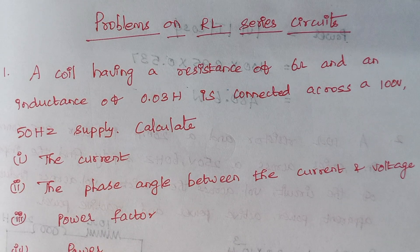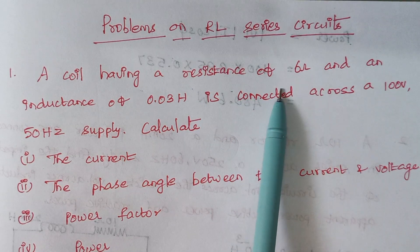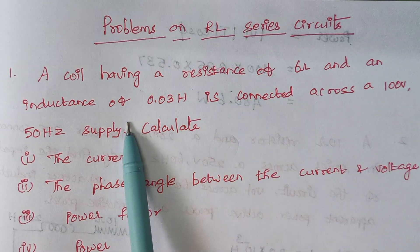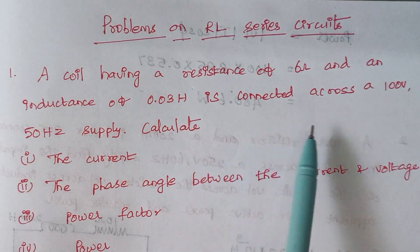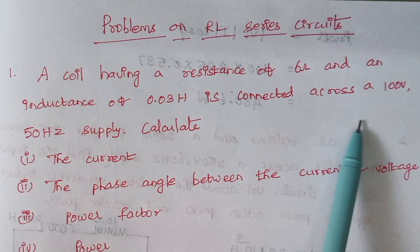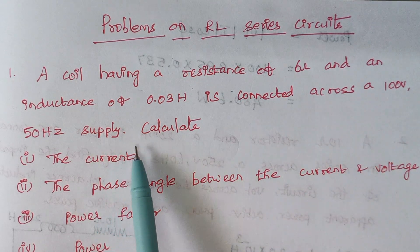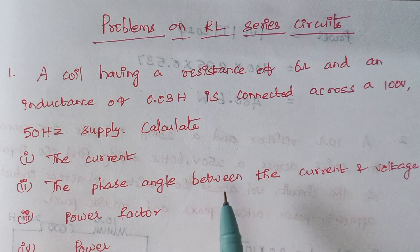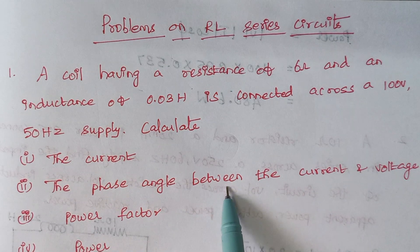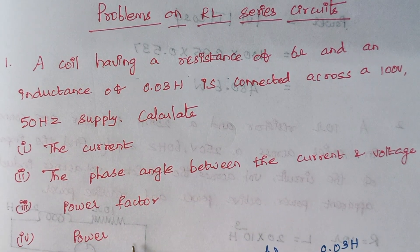The first problem is: a coil having a resistance of 6 ohm and an inductance of 0.03 henry is connected across a 100 volt 50 hertz supply. Calculate current, the phase angle between the voltage and current, power factor, and power.